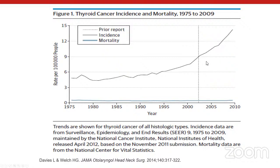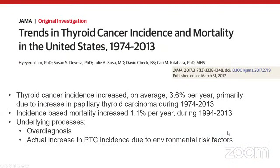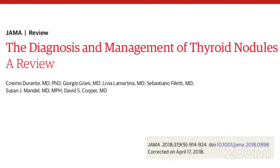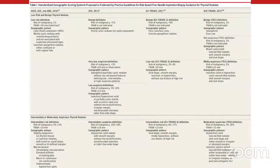Similar data was later published about the United States, showing the same pattern: mortality remained very low while incidence went up. A more recent paper argued there is indeed a true increase in PTC incidence, with a small associated mortality increase. Regardless, there seems to be general agreement that we are diagnosing too many thyroid cancers. Many organizations regulate thyroid nodule management — including the American Thyroid Association, which published their guideline in 2015 shortly after those papers.